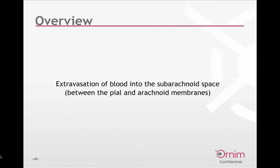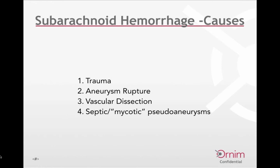By definition, subarachnoid hemorrhage is the extravasation of blood into the subarachnoid space, which is the space between the pial and arachnoid membranes. There are numerous causes. Probably the most common cause we see clinically is trauma, followed by aneurysmal rupture, vascular dissection, and many other causes such as septic or mycotic pseudoaneurysms.